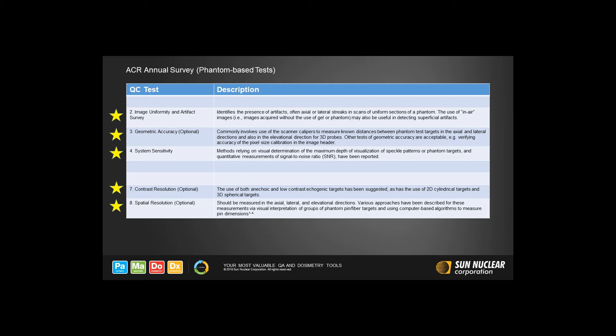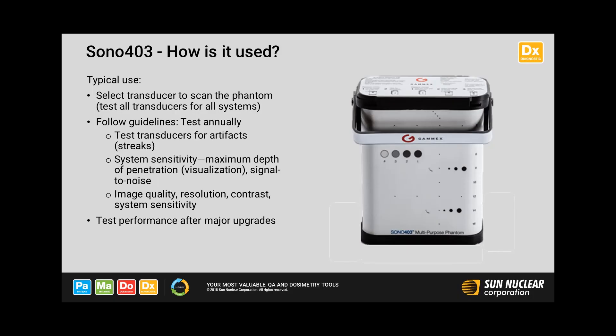To summarize, ACR QA tests need to be done for each transducer and each scanner in the facility. Those done by imaging the SONO 403 phantom include image uniformity tests, geometric accuracy tests, both vertical and horizontal, system sensitivity done using a depth of penetration, and this is done at both a fundamental and a harmonic frequency, and then the optional contrast resolution and spatial resolution could be done rigorously, but here we only generated images for qualitative assessments to be used from one annual survey to the next. These tests fit well within the intended applications of the SONO 403 phantom. Besides its use for routine tests, such as annual surveys, we recommend that the tests be carried out after a major upgrade, such as a software upgrade, to the ultrasound imaging system.